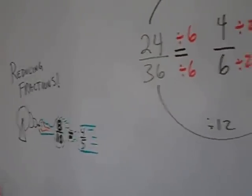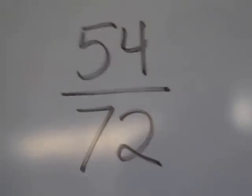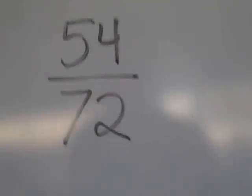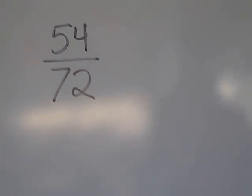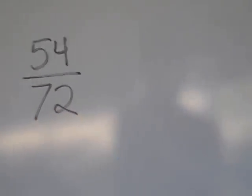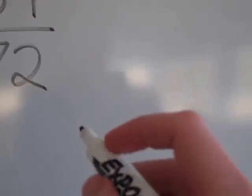Just one more example to show you for reducing fractions. This is 54 over 72, 54 over 72. Now here, this is a pretty tough example. You'd have to be doing a lot of division, so I'm going to show you a way to reduce this that you might never have seen before.